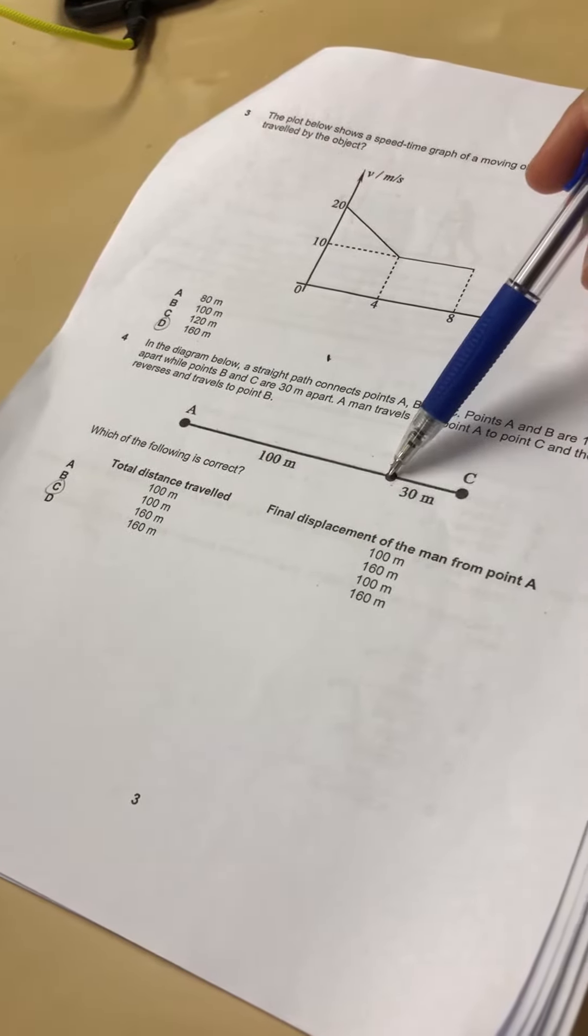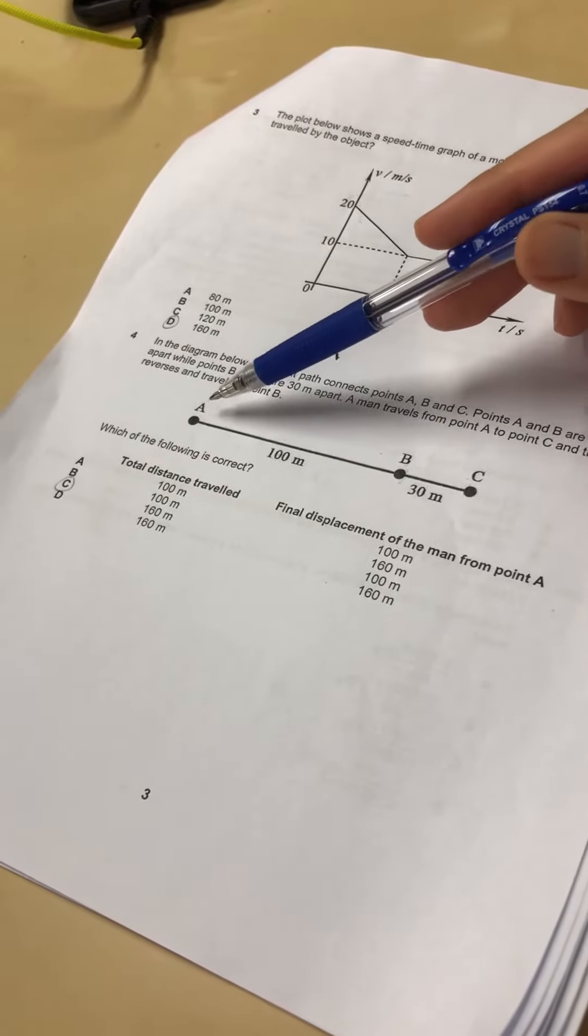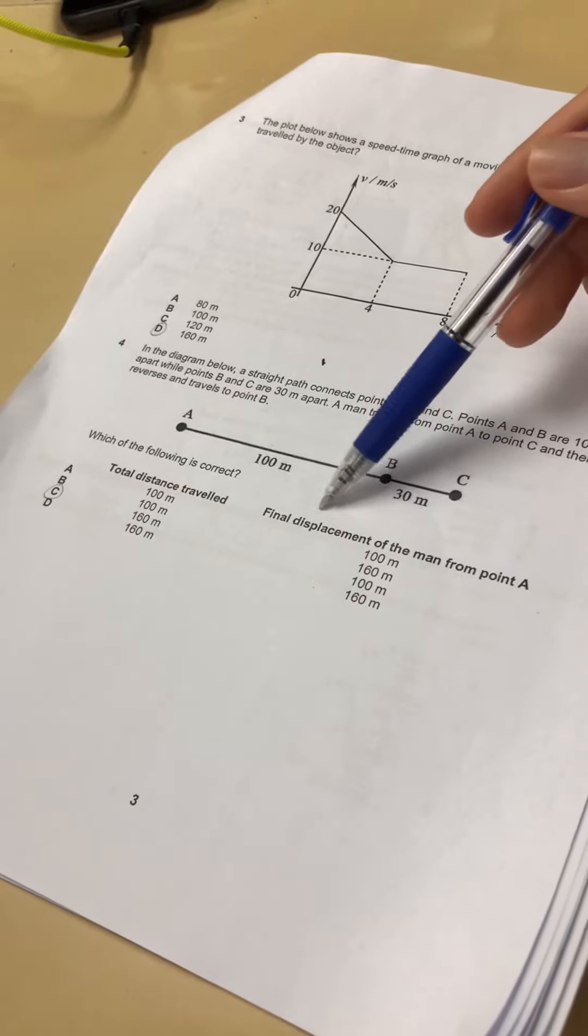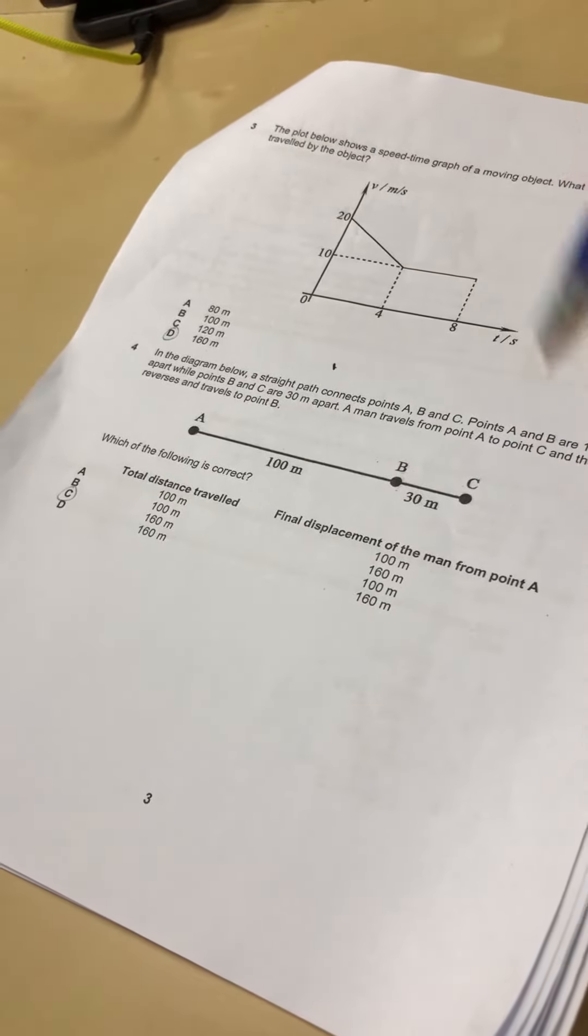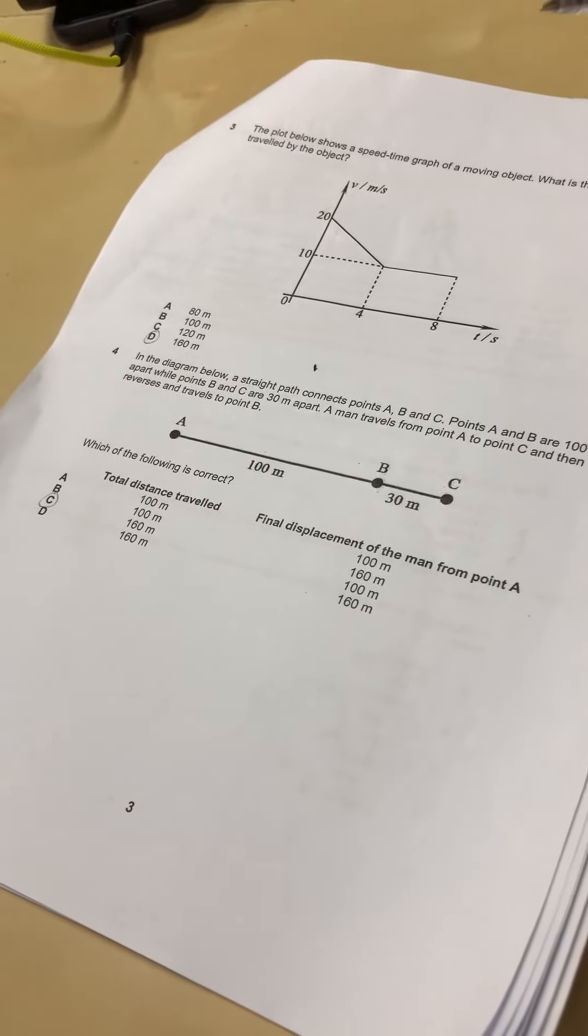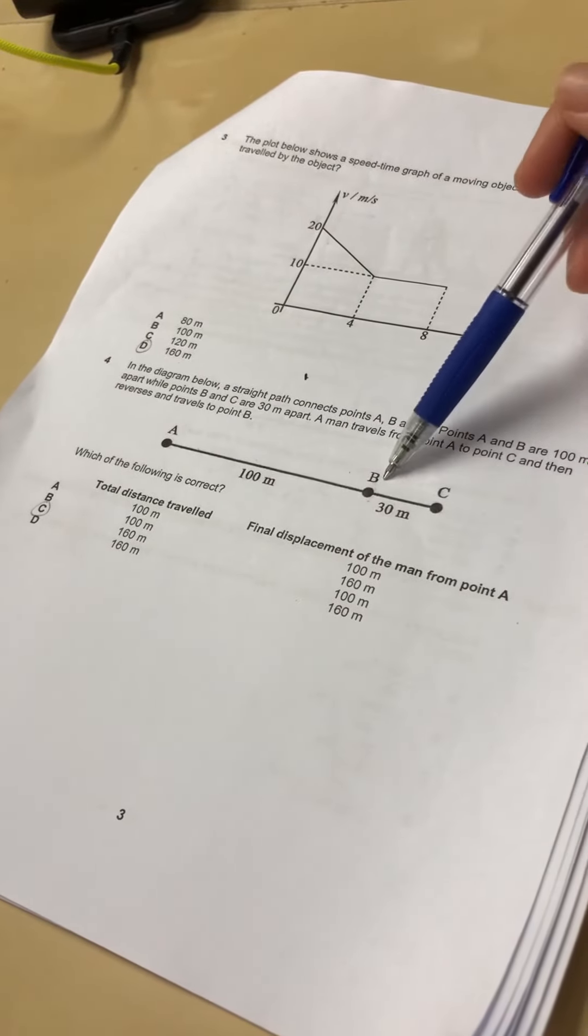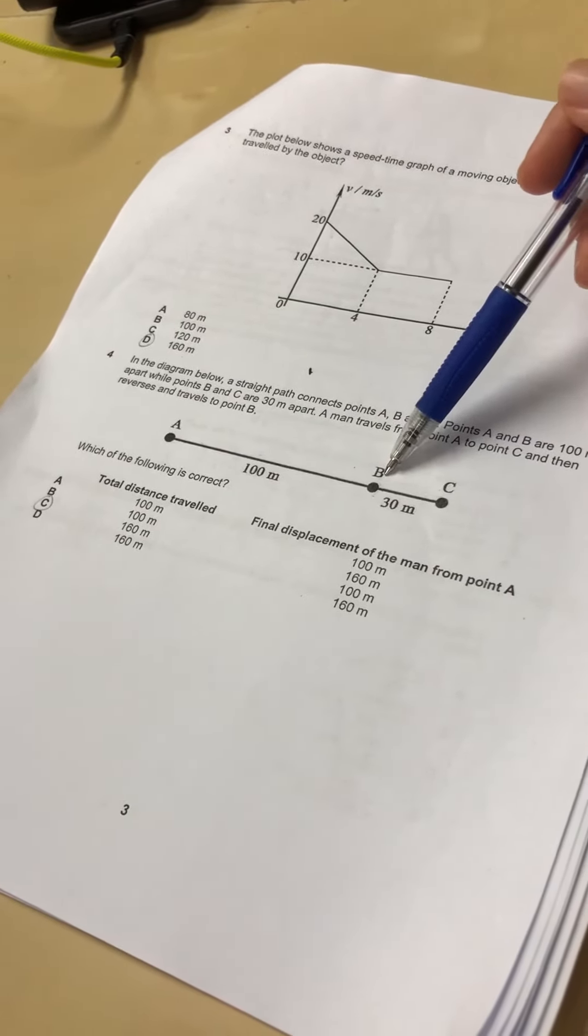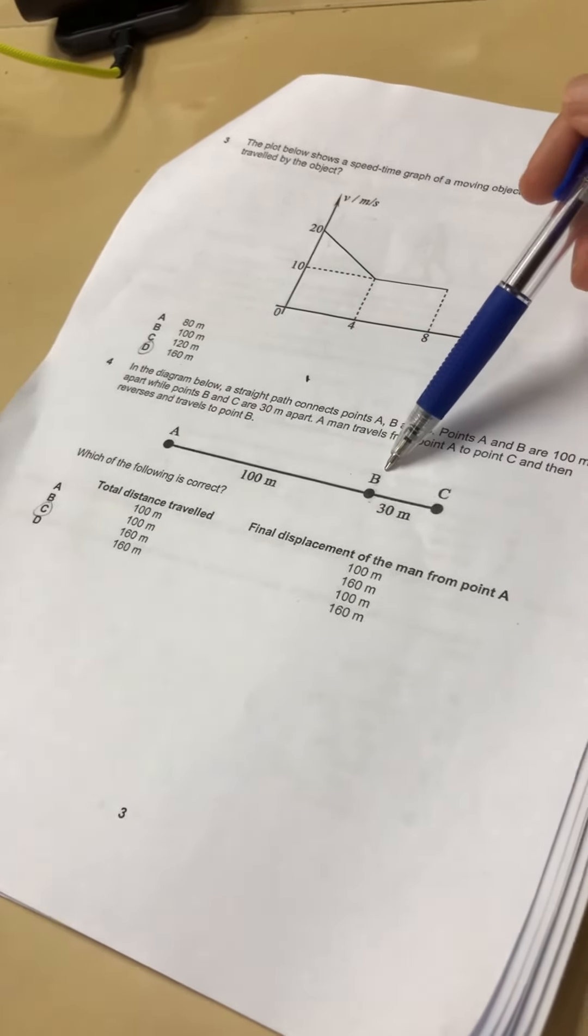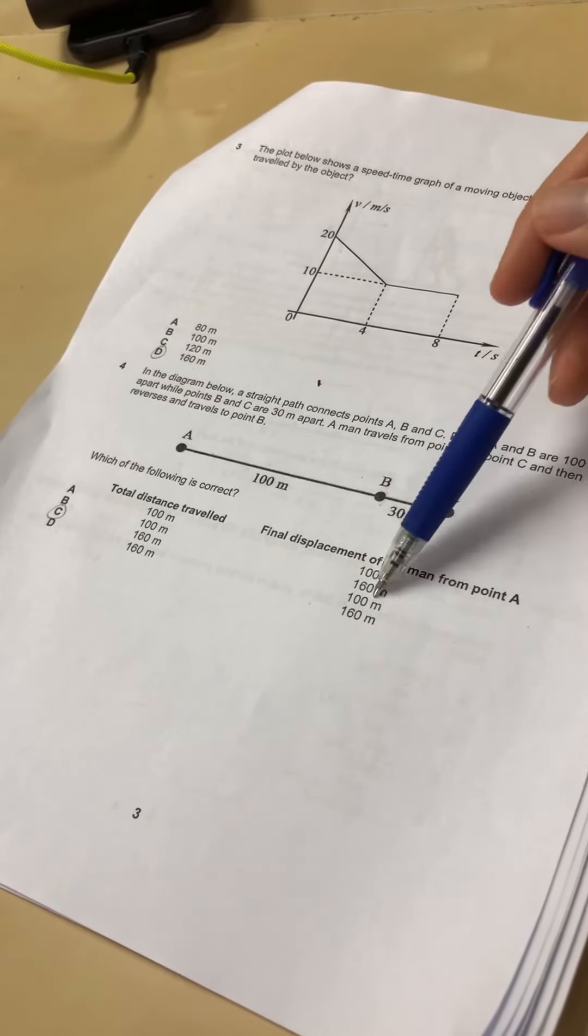Whereas for displacement, the word displacement means from origin, how far away he is from the original starting point. So where he ended up - he ended up here, right? He came here and then came back here. So how far away is he from the original starting point? 100 meters. So displacement is 100.